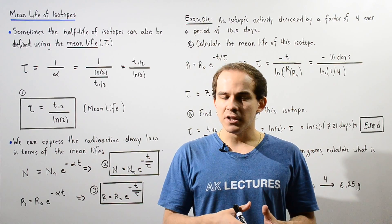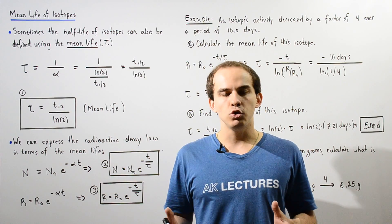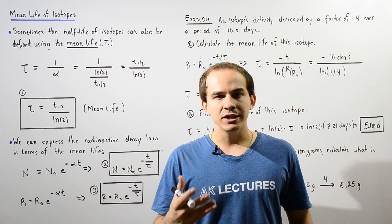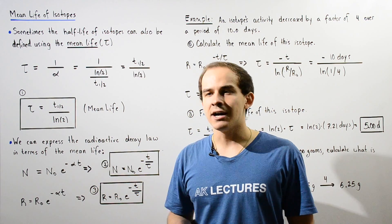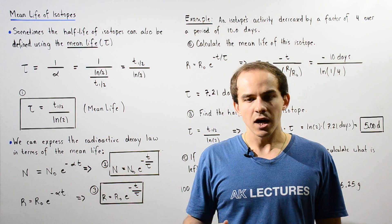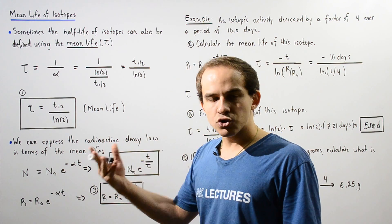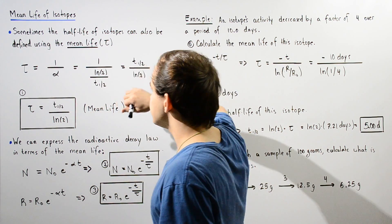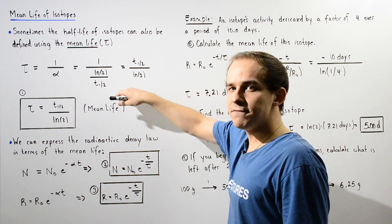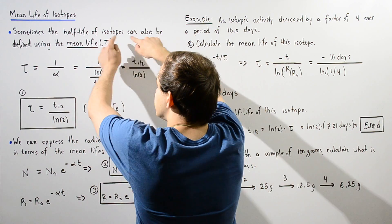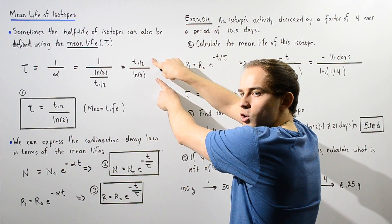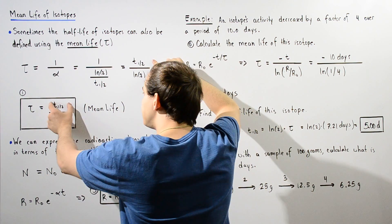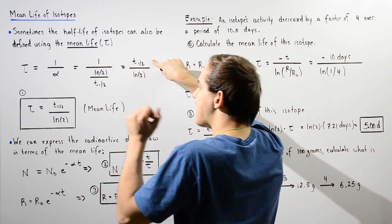Another way of defining the half-life of any unstable isotope is by using a concept known as the mean life. The mean life, given by the Greek letter tau, is equal to 1 divided by the decay constant alpha. The decay constant of any isotope is equal to the natural log of 2 divided by the half-life. Replacing alpha with that expression and rearranging, we get that the mean life tau equals the half-life divided by the natural log of 2.